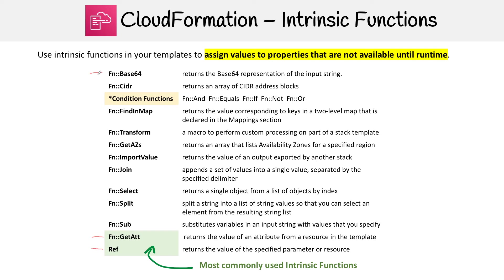There are some cases where you need values to be Base64 — I've definitely had to use this before. Then you have Cidr, which returns an array of CIDR address blocks. When you're working with VPC resources, they need to be in the CIDR format, so that's when you'll be using that function.